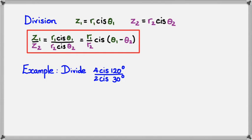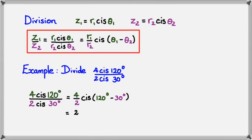So I want to divide 4 cis 120 degrees by 2 cis 30 degrees. Writing this down, I've got 4 cis 120 divided by 2 cis 30 equals 4 divided by 2 cis of 120 minus 30. And simplifying this, we would get 2 cis 90 degrees, and this is in polar form.